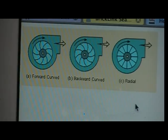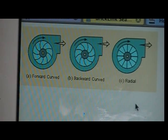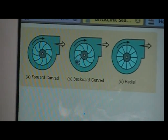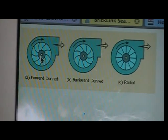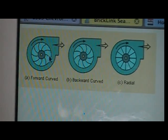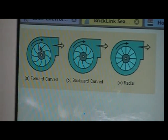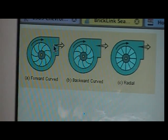There's three different types of fan blades on the fan wheel. There's the forward curved, which is used for relatively low pressure, high volume applications, like hot air dispersion.